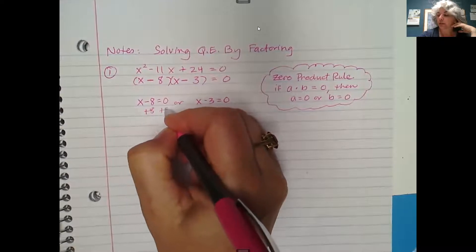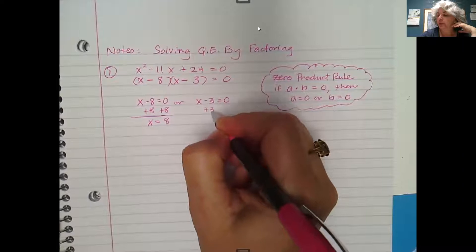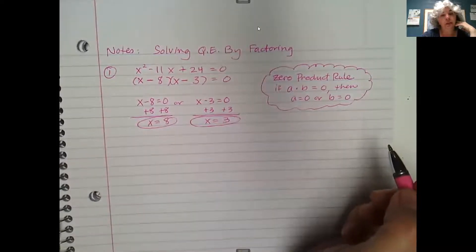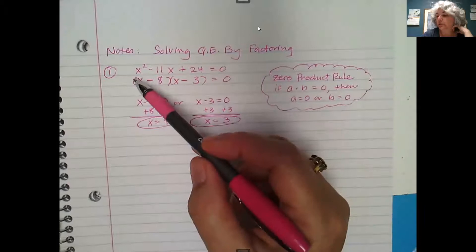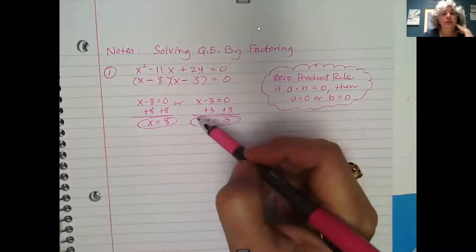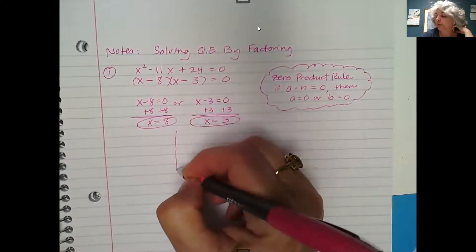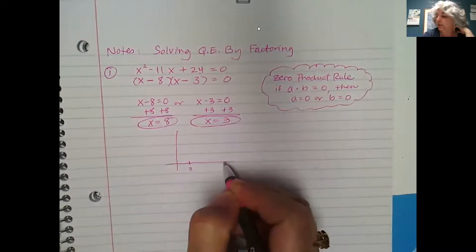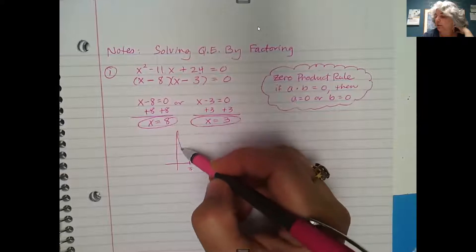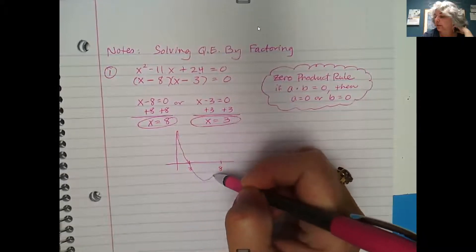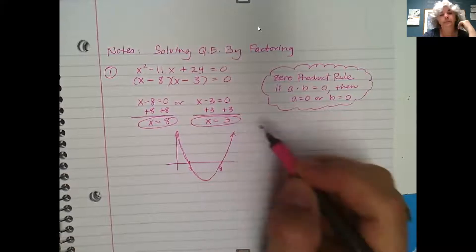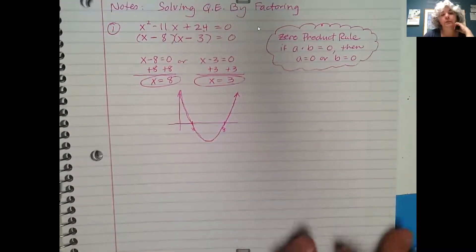The last step is to solve each little equation for x. Adding 8 to both sides gives x equals 8, and adding 3 to both sides gives x equals 3. Those are the answers. If you were to graph this and look for the zeros or x-intercepts on Desmos, the x-intercepts would be at 3 and 8. You'd see a parabola opening up with a y-intercept at 24, coming down and crossing the x-axis at those two points.